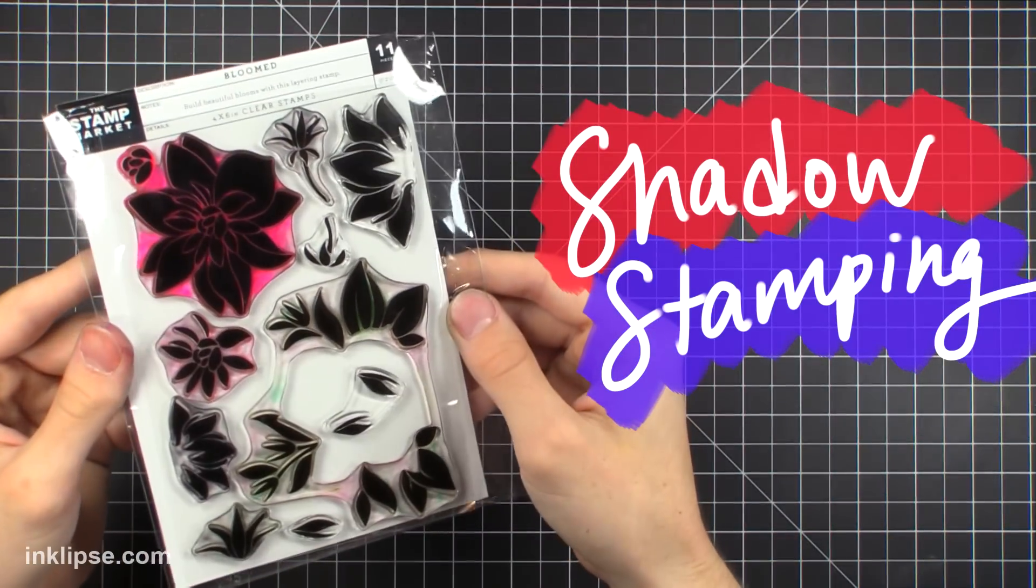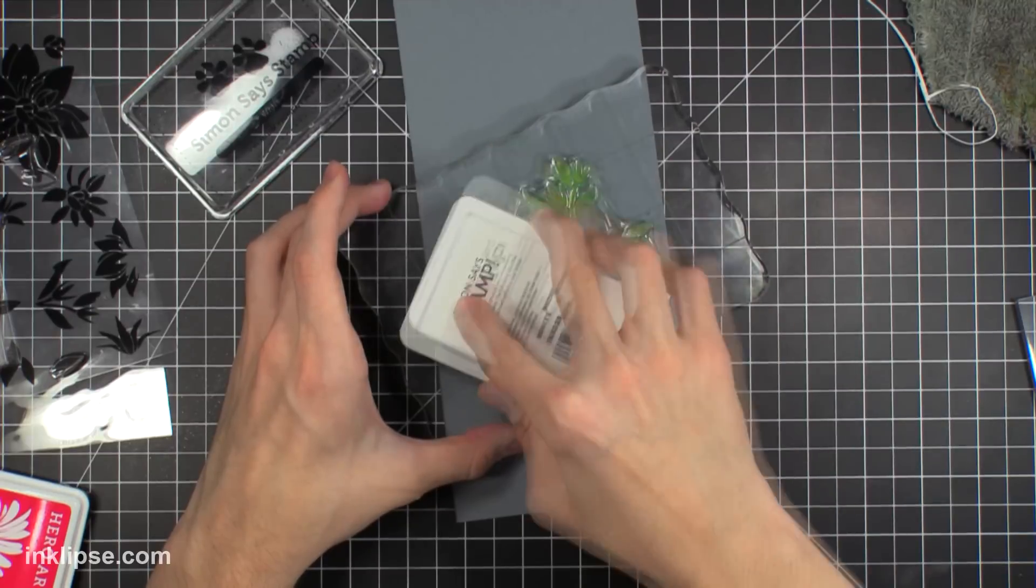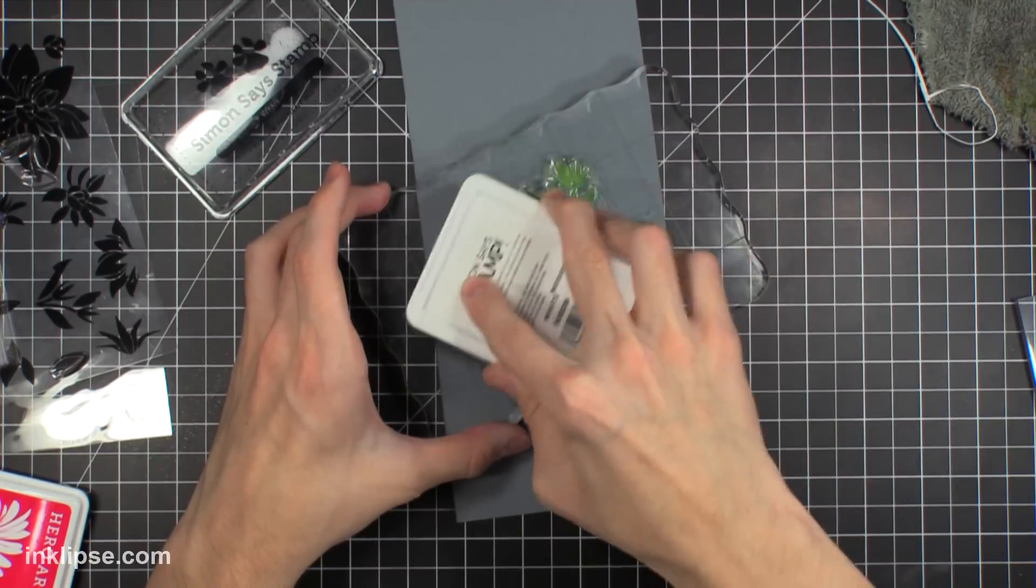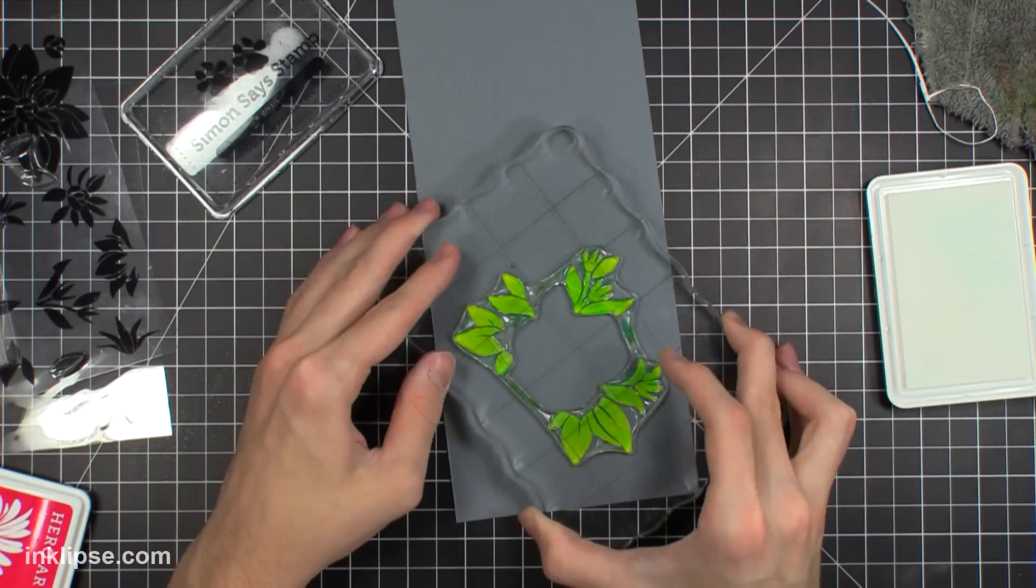All right so this first technique is shadow stamping. One of my favorites actually, it kind of just creates a darker shadow on an image that you're going to be stamping down. So I'm starting off with a white pigment ink. You're going to want to cover your whole stamp with that and then flip it over and stamp it onto your cardstock.